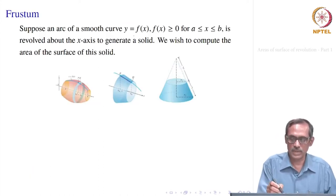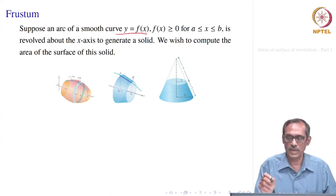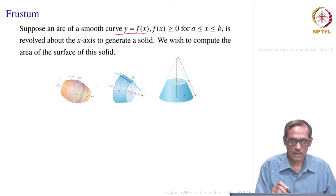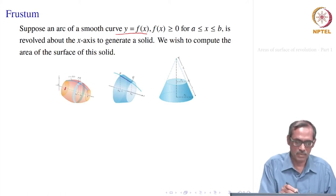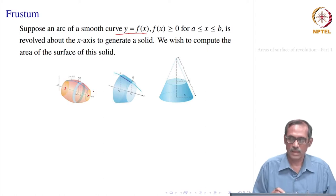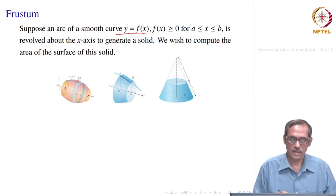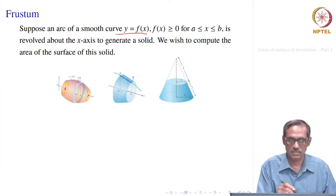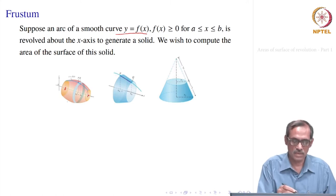Suppose we have a smooth curve given by a function y = f(x), where f(x) ≥ 0, meaning it lies in the top half-plane, and x varies from a to b. That is how the curve is defined. Now this curve is revolved about the x axis — let us take the x axis case first.